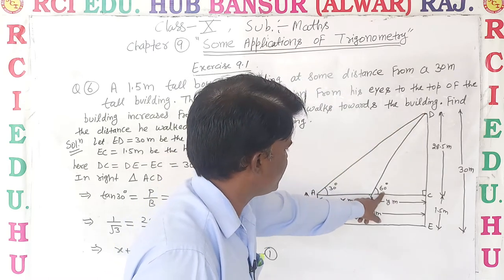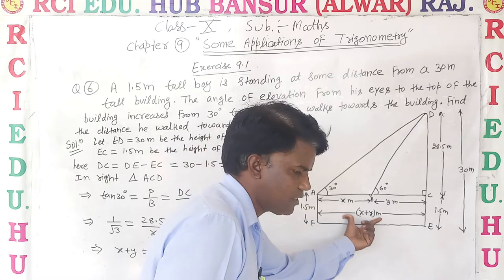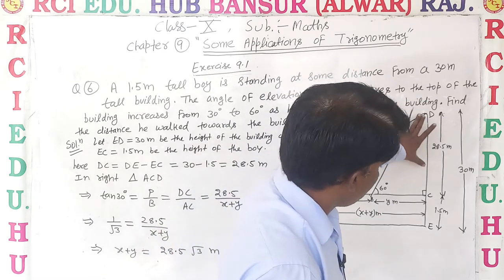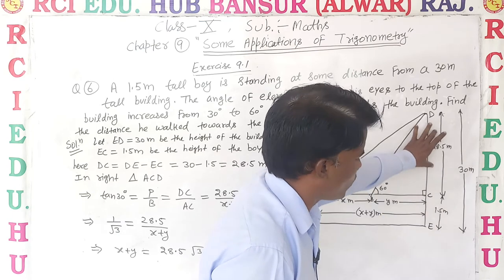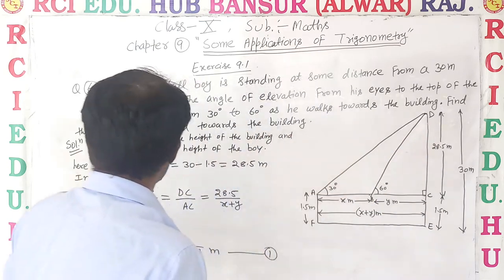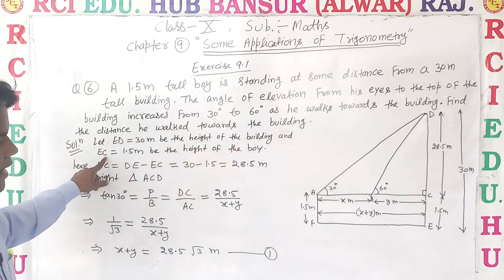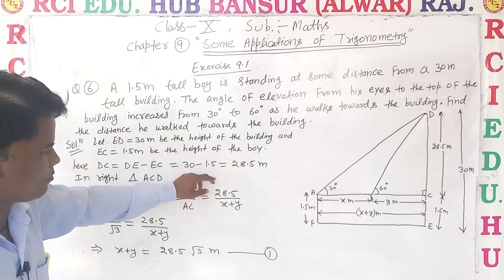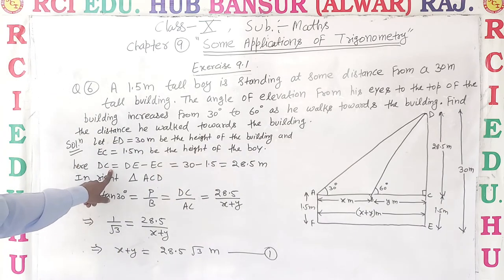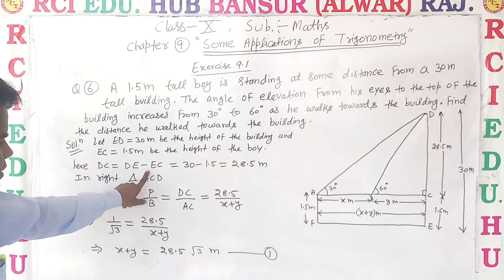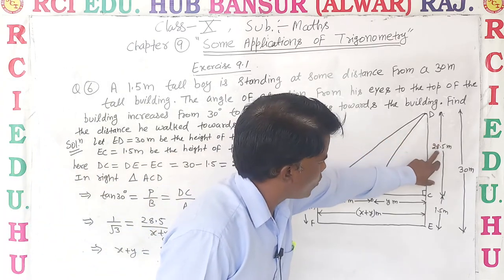The angle increases from 30 degrees to 60 degrees. Suppose the initial distance beyond point B is x meters, and BC is y meters, so total distance AC is x plus y meters. Total height of the building is 30 meters. Here, DC equals DE minus EC, which is 30 minus 1.5 equals 28.5 meters. So DC equals 28.5 meters.